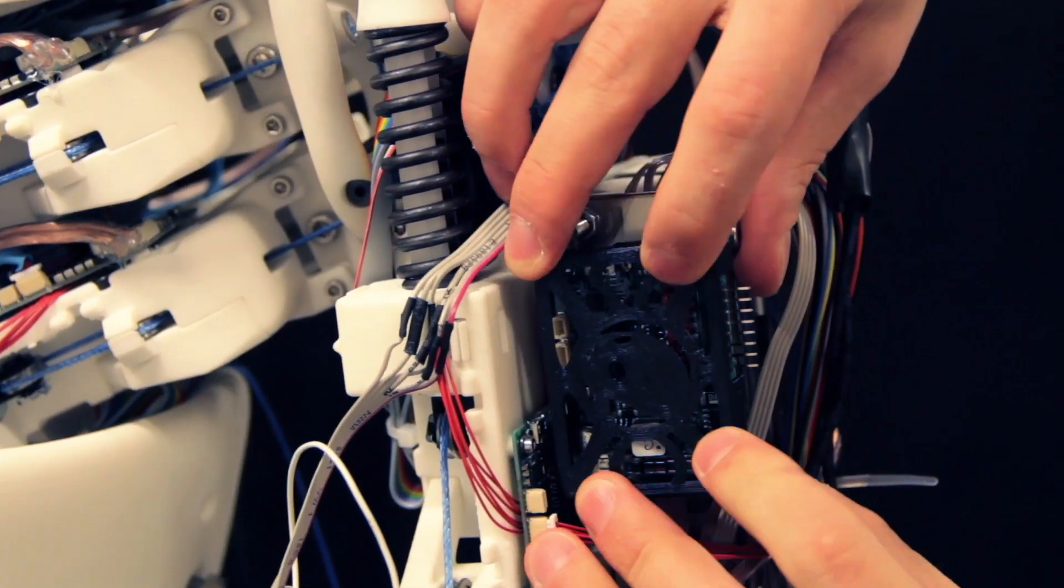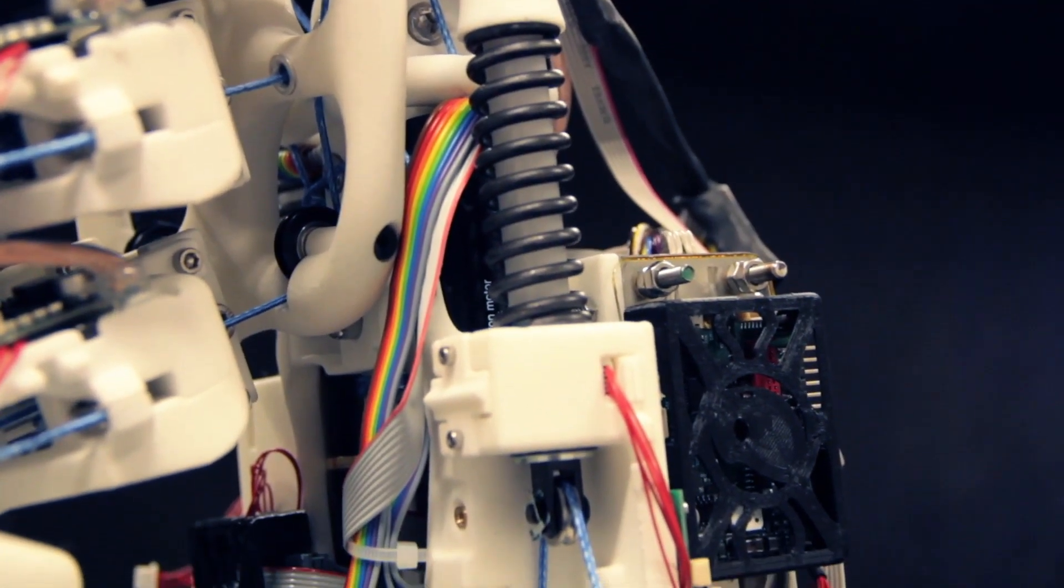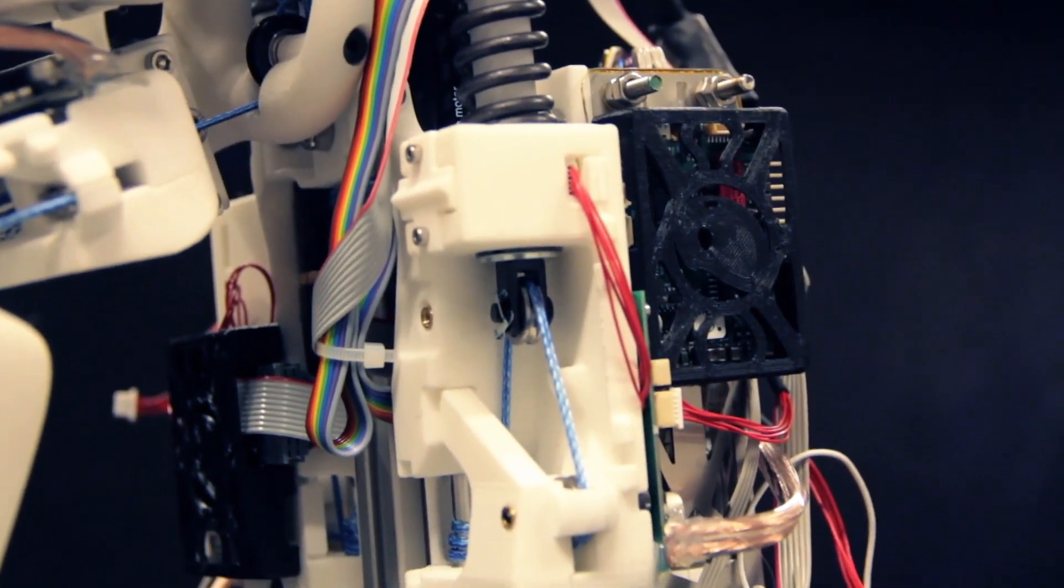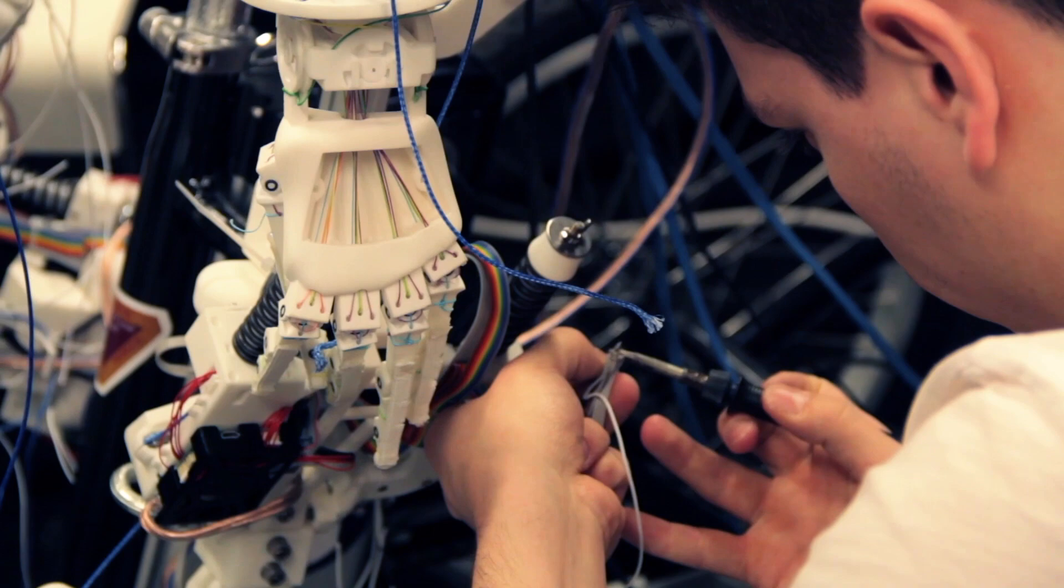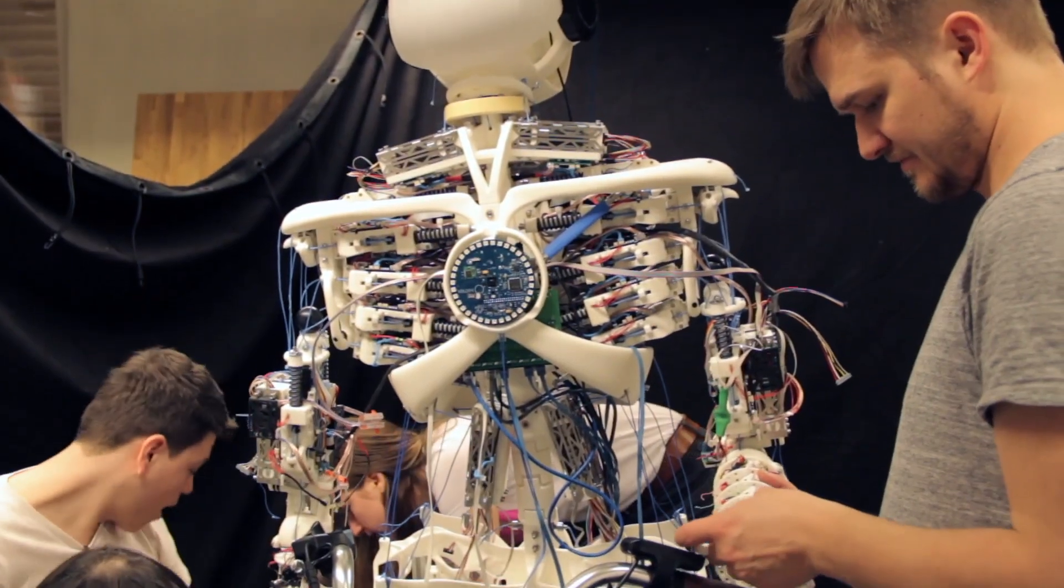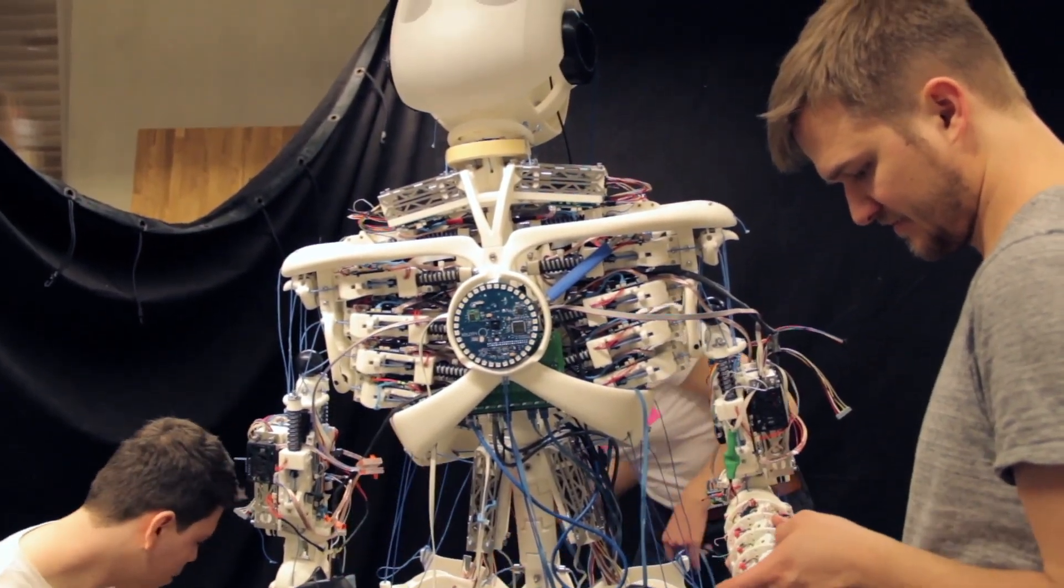The muscle unit is comprised of a motor and a spring with a pulley system. And they try to represent a human muscle as close as possible.